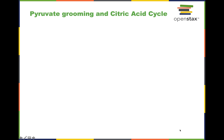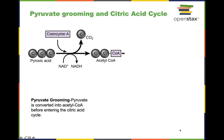Now we're going to look at the pyruvate grooming stage and the citric acid cycle. When pyruvate — sometimes called pyruvic acid, they're interchangeable — comes out of glycolysis, it goes through what's called a grooming or oxidation step.